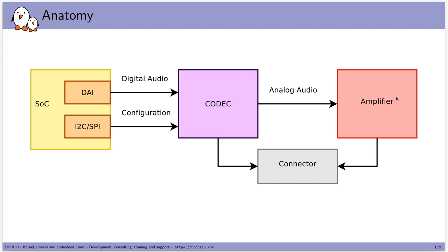The anatomy of an embedded system would be: on one side you get the SoC. The SoC will have two different kinds of connections to a codec, and that codec will either output analog audio directly to a connector, or maybe through an amplifier. The two kinds of connection are first the configuration connection — typically I2C or SPI — but that can also be I/O memory directly on the SoC. The second kind is the digital audio connection, which we'll look at in more depth.